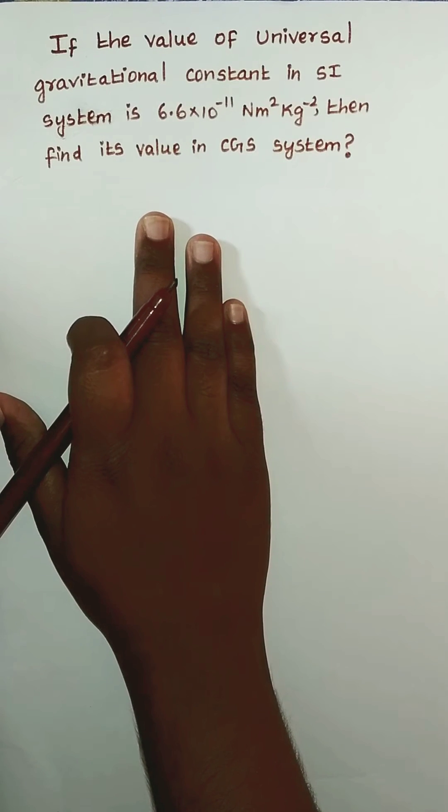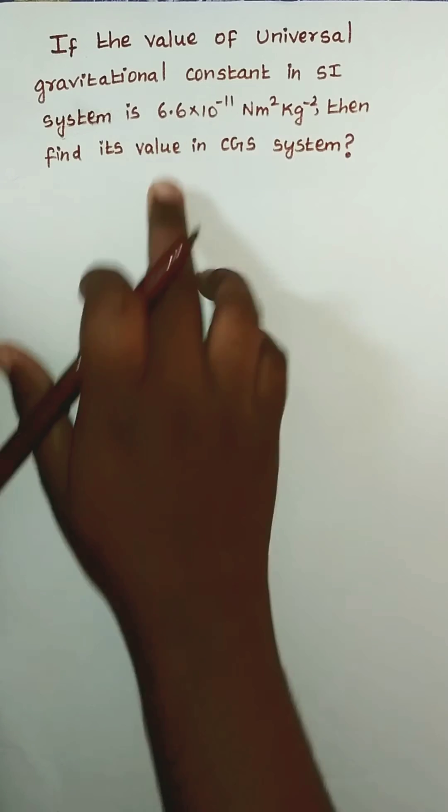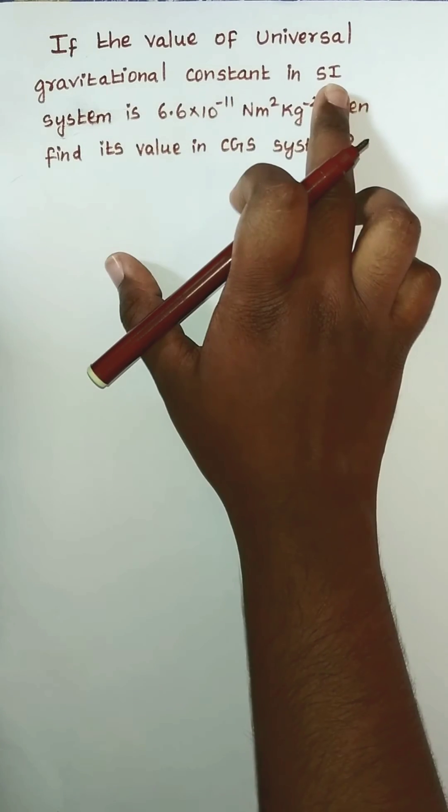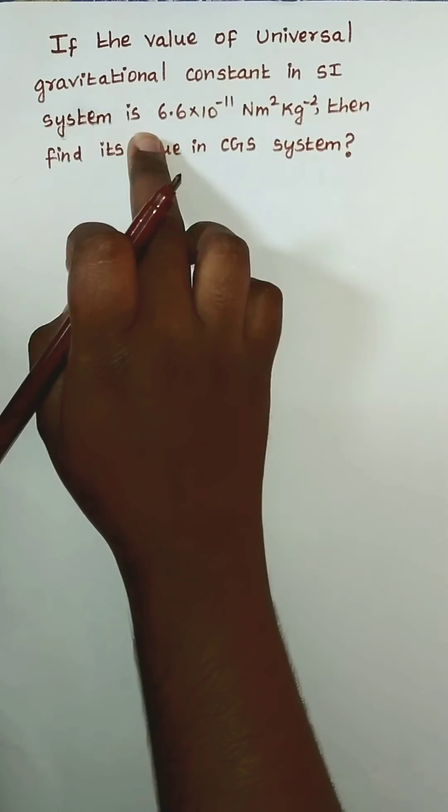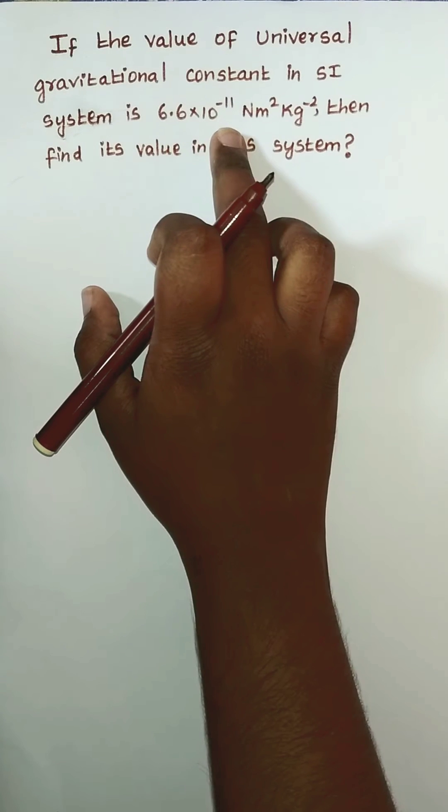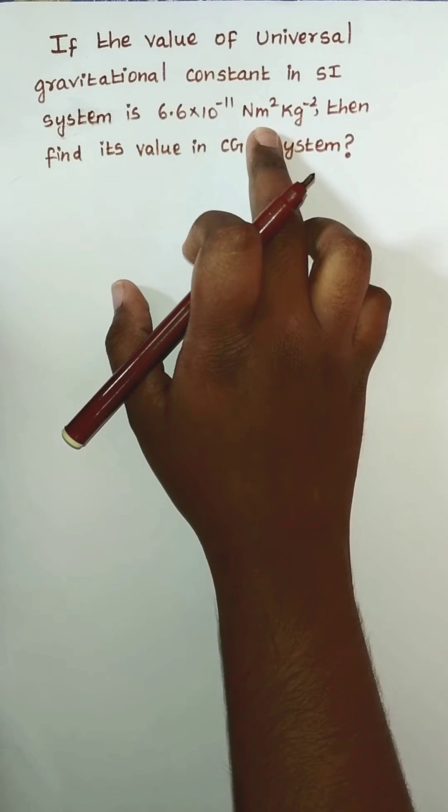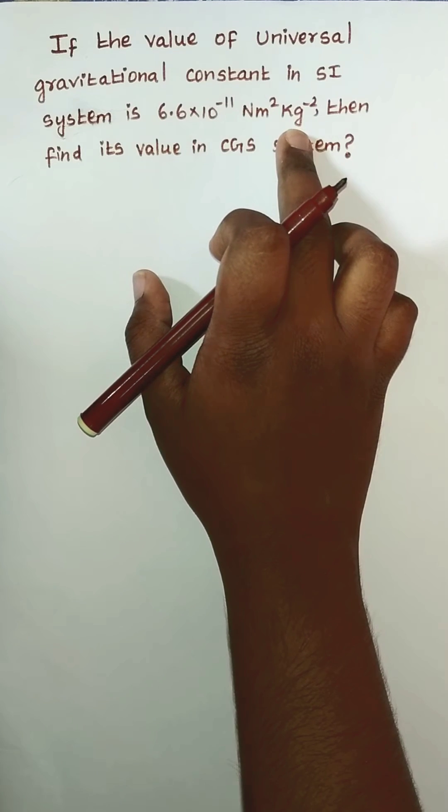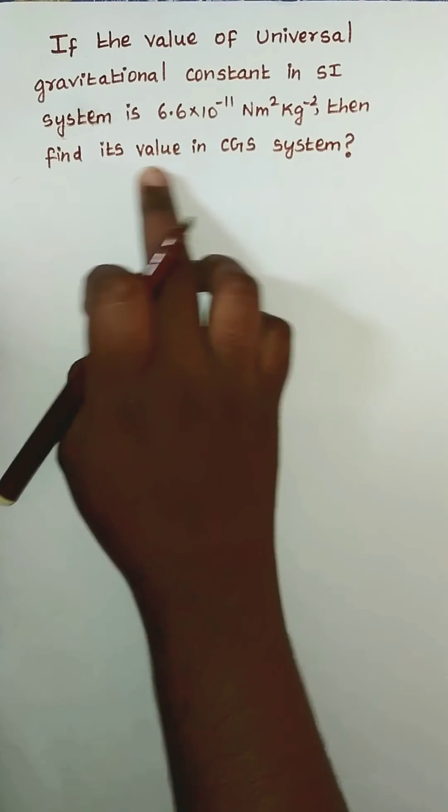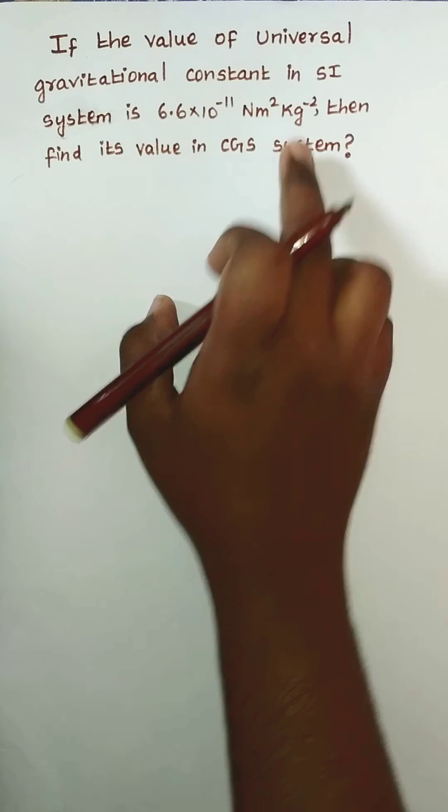Read the question. If the value of universal gravitational constant in SI system is 6.6 × 10⁻¹¹ N·m²·kg⁻², then find its value in CGS system.